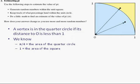We know that the area of the quarter circle is π/4 and the area of the square is 1.